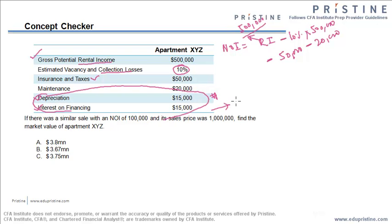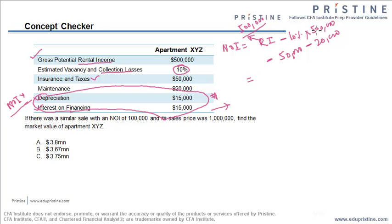This is an important note: depreciation and interest on financing do not come under NOI. NOI has four components: revenue or rental income; vacancy and collection losses; insurance and taxes; and maintenance and repair cost. So NOI = 500,000 − 50,000 (vacancy) − 50,000 (insurance and taxes) − 20,000 (maintenance) = 380,000 USDs.